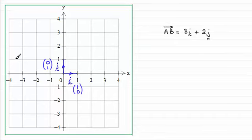All we know is that if A was at this point here, then B would be three units along in the i direction (1, 2, 3) and two units up in the j direction (1, 2). So that would be point B, and the vector AB would be that one there.